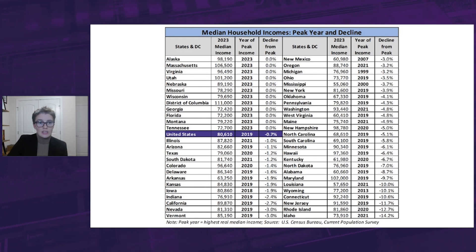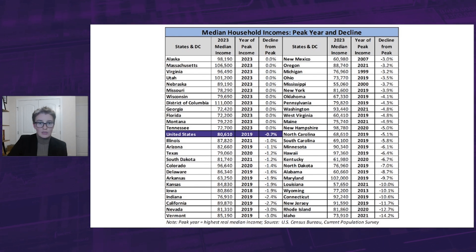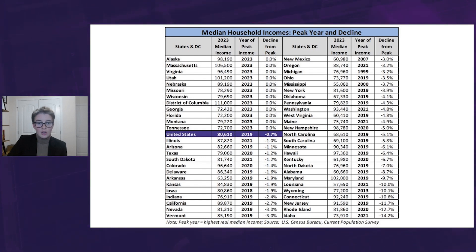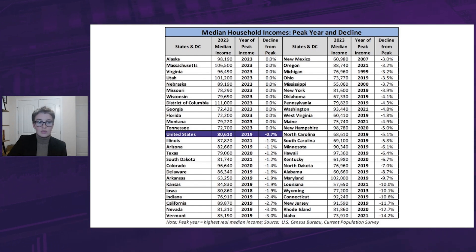Currently, 11 states as well as Washington, D.C. are at all-time highs for their median household incomes. Additionally, six states are currently 10% or more off their peak, with Idaho sitting the farthest away, down 14.2% since its real peak in 2021.